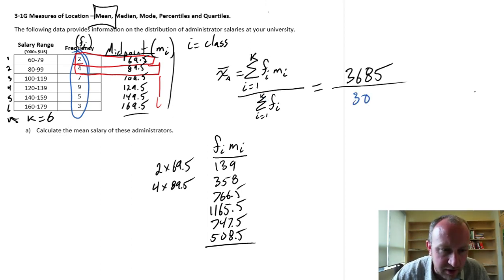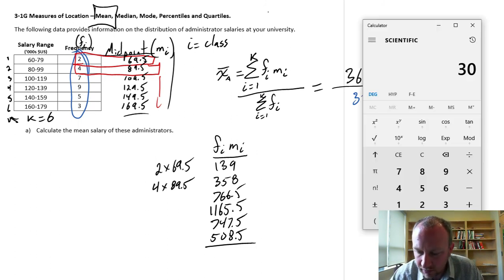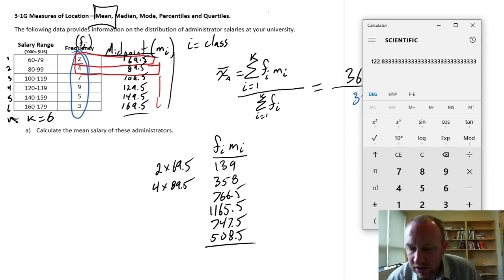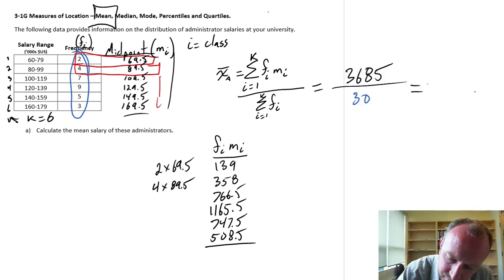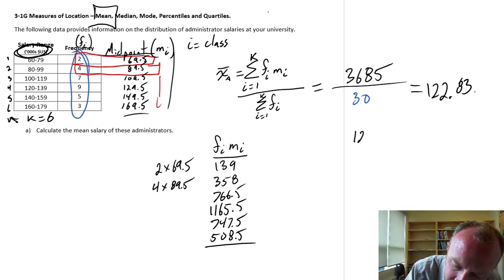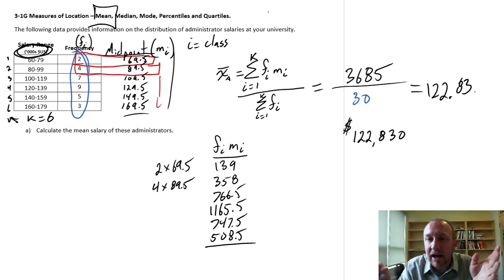And this equals 3685 divided by 30, which is 122.83. And this is in thousands of dollars US. So this gives me an average salary of $122,830. An approximate average.